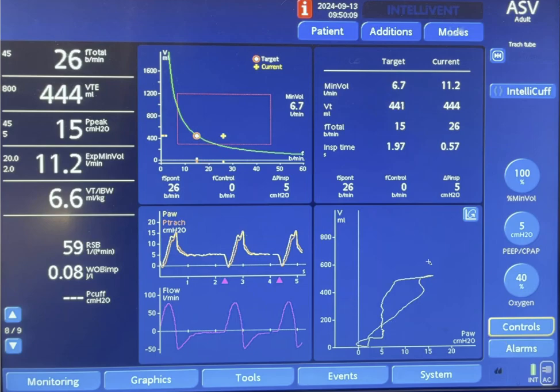Excellent. So now the question is why this is happening. The minute ventilation that the patient is getting right now is 11.2 which is higher than the targeted minute ventilation which is 6.7.